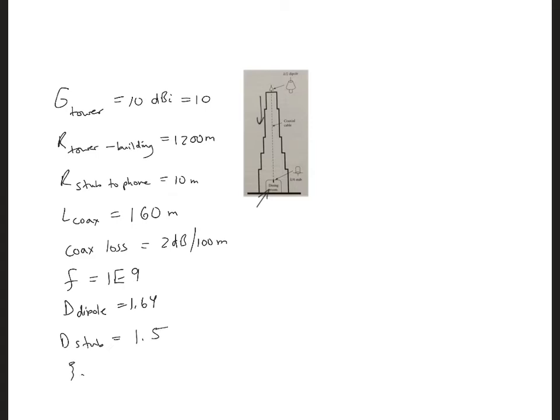And the efficiency of the dipole and the efficiency of the stub are both equal to 1, since they're both lossless. Let's first consider the cell phone tower link to the top of the building.